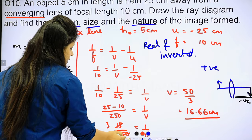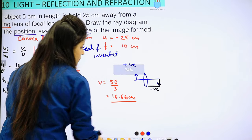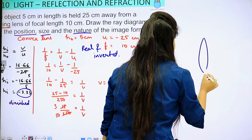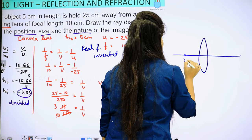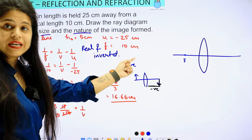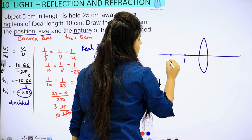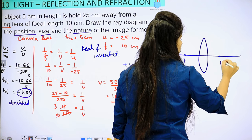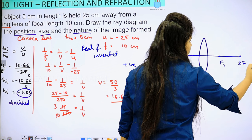Now let's see the ray diagram. We have made a convex lens. Here we have made our focus. We keep the object at minus 25 cm. The focal length is 10, so F is at 10 cm. Extending it, 2F is at 20 cm on the left side, and F2 and 2F2 are on the right side. The object is placed at 25 cm, which is beyond 2F on the left.